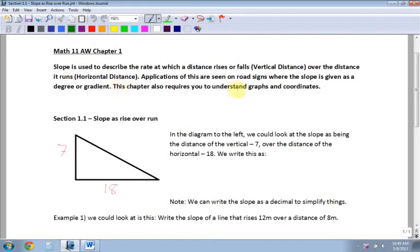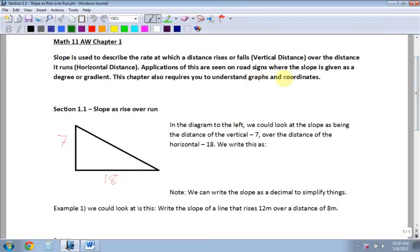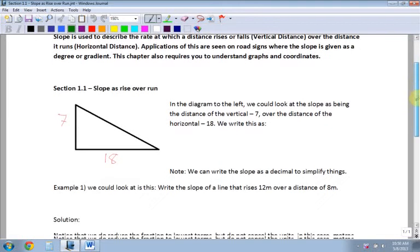We can see this in road signs. Slope is given as a degree or gradient, which we'll look at later on in this chapter. You also have to know how to understand graphs and coordinates, so make sure that you watch the video for section 1.3. It reviews how that works on a grid.